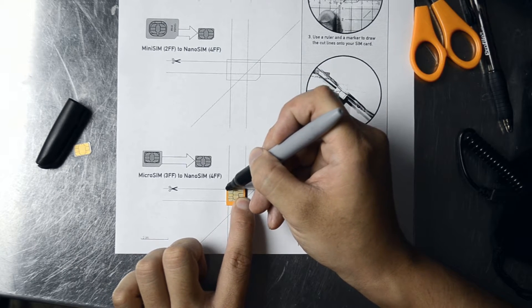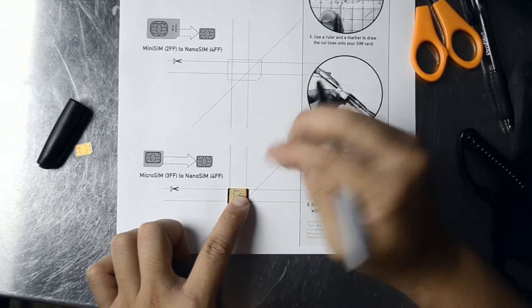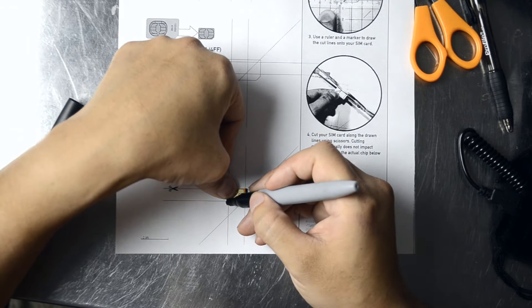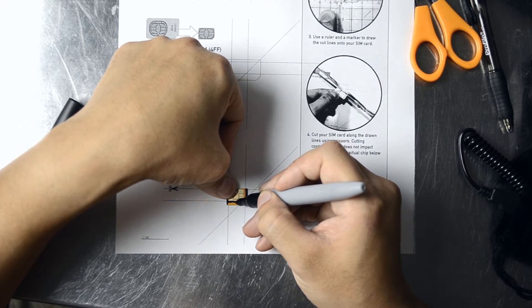Basically, we're going to cut off this whole back part, most of the front, on the bottom pretty much going to butt right up against the contacts here.